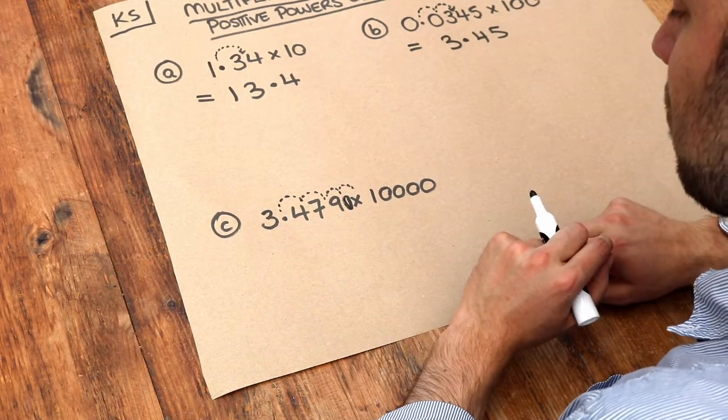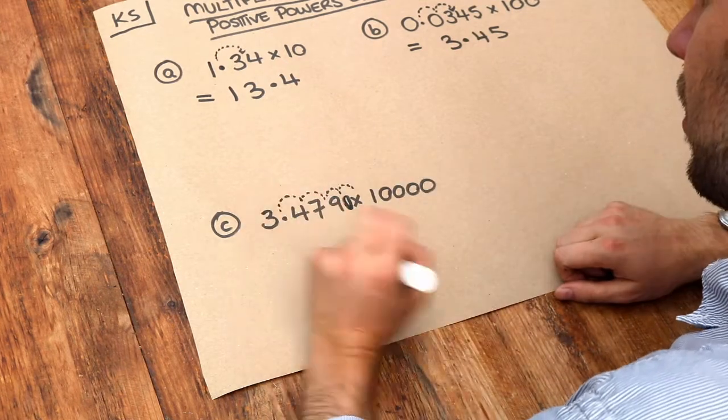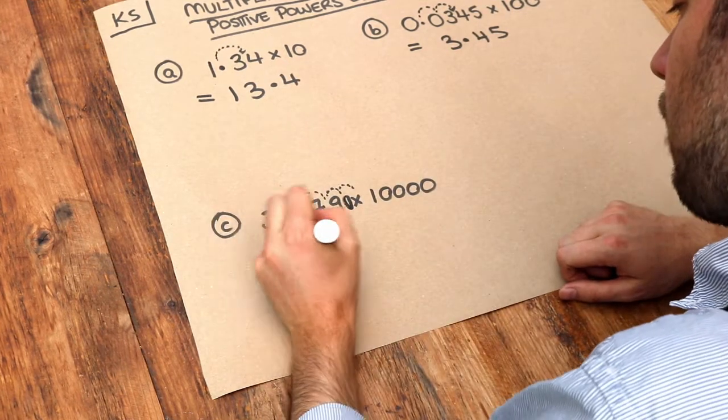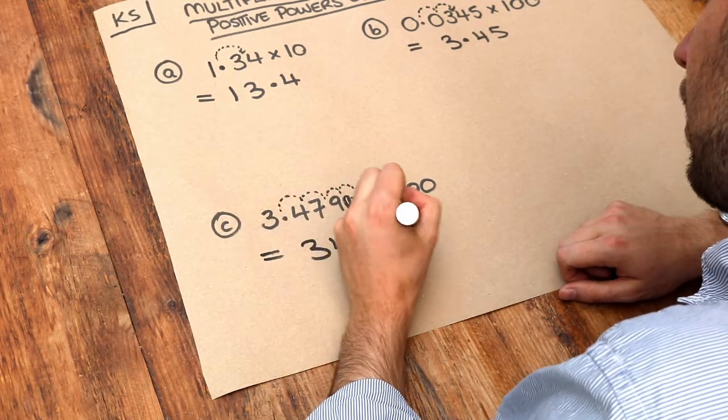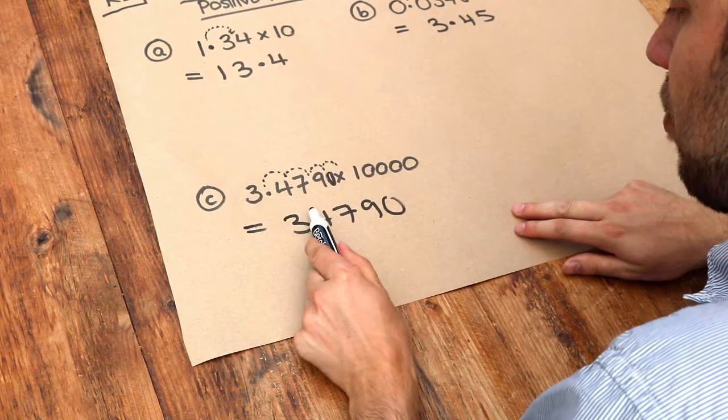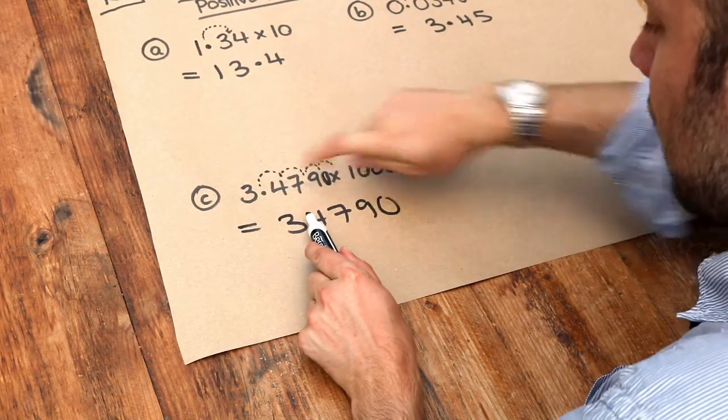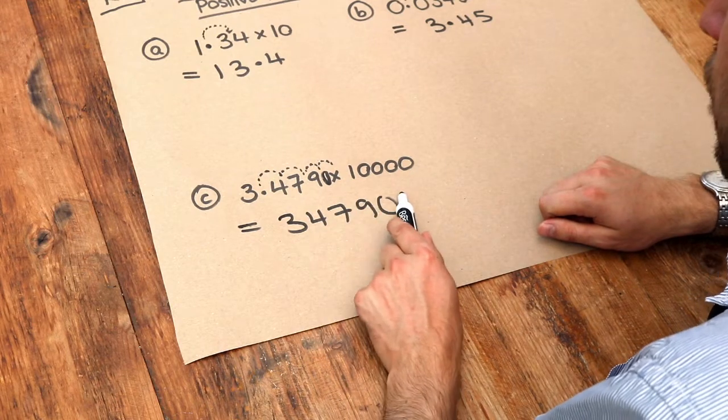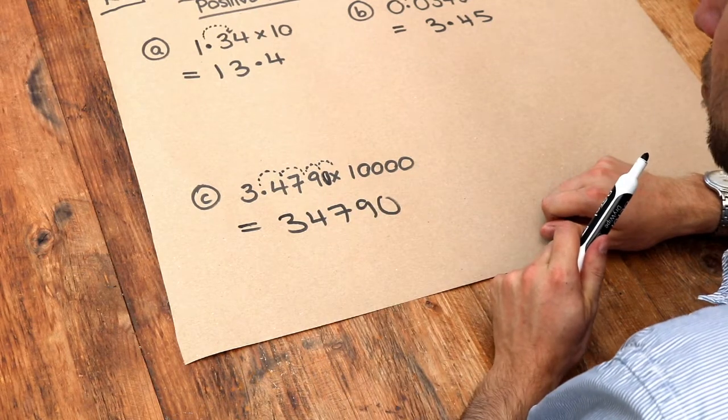And now we can see the decimal point is just after that zero, so we've got 34790. Let's just double-check. The decimal point was here originally. One, two, three, four movements. So that is indeed right.